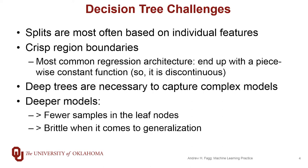Decision trees, though, present lots of challenges. For the trees we've been studying, and for most algorithms that are out there, the splits are done based on individual features, and these are generally axis-aligned features.